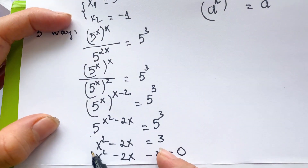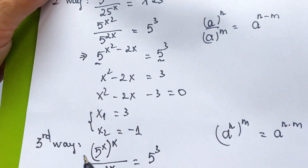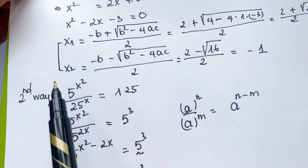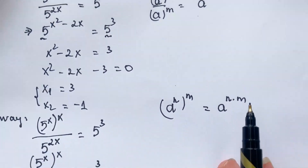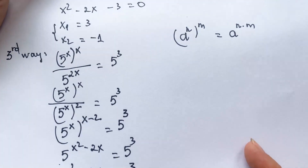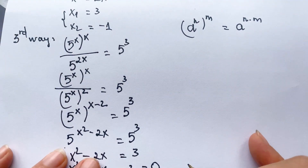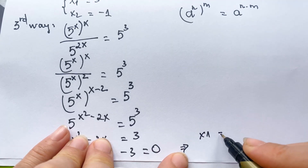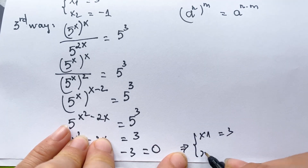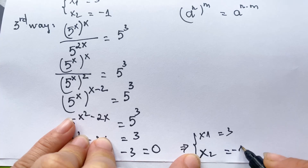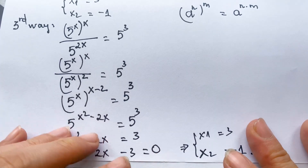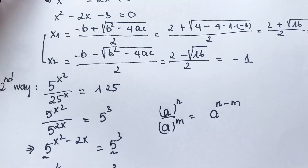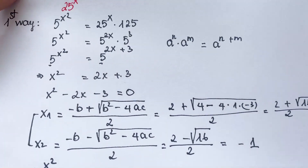For this equation, you can look back at the first way and the second way. We also have two values of x: x1 equals 3 and x2 equals minus 1. Thank you for watching my video. Don't forget to subscribe to my channel. Love you all, see you!